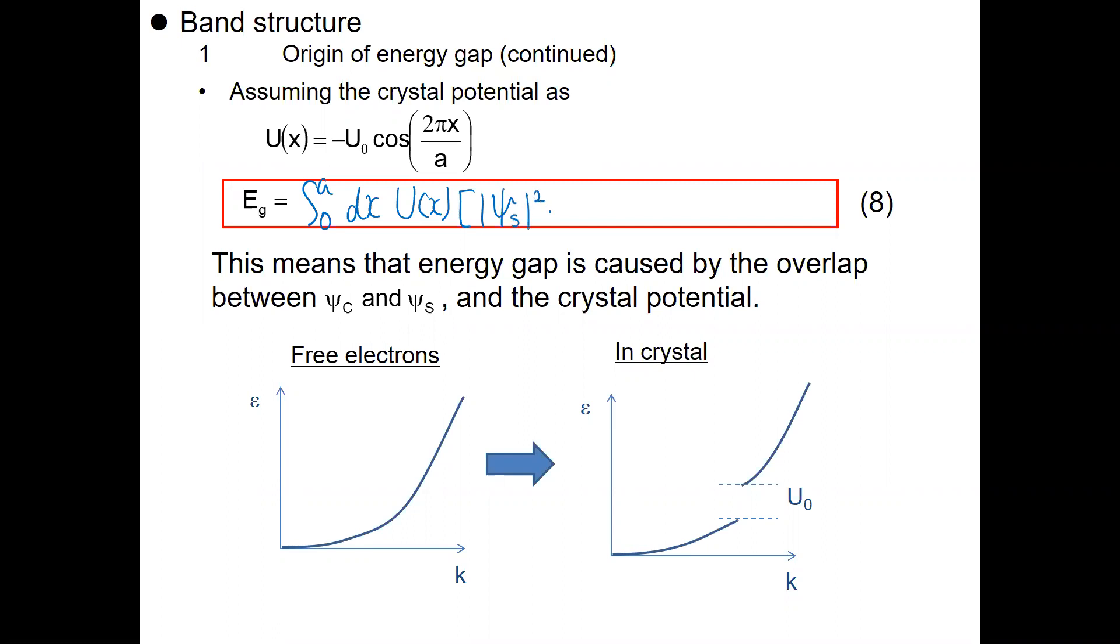Integrating psi s squared and psi c squared with the potential U(x), you can obtain the energy values as constants. What it means is there is some energy gap between psi s and psi c with a value of U0.